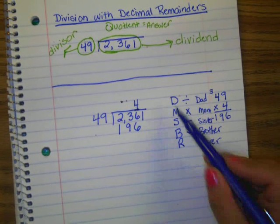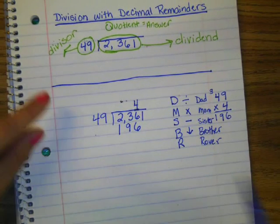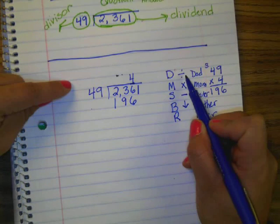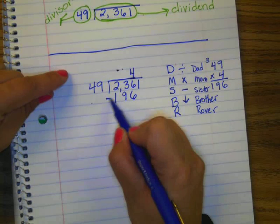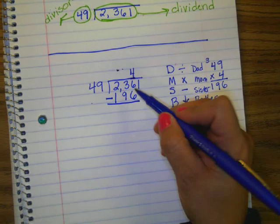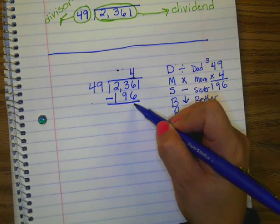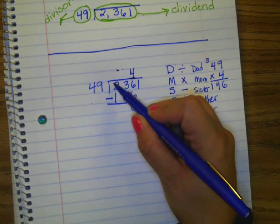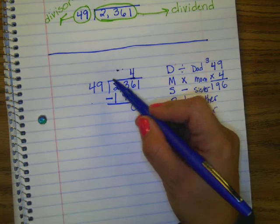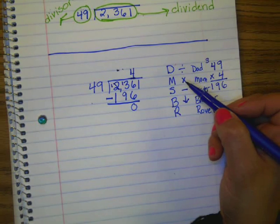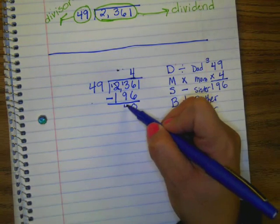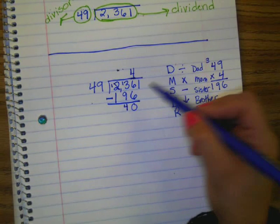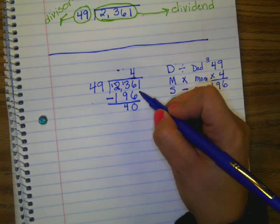So far, I divided, I multiplied, now I'm going to subtract. Six minus six? Zero. Three minus nine? Zero. Nope, can't do it. Have to borrow. Thirteen minus nine? Four. Four. Okay. So I subtracted. I have a one to bring down.